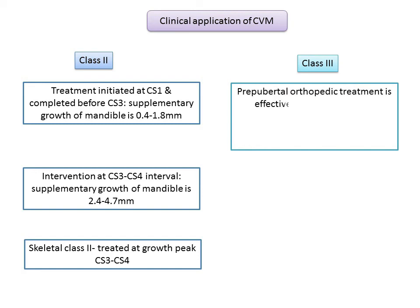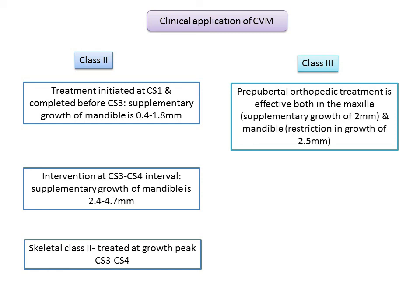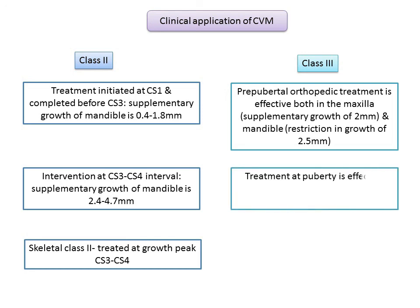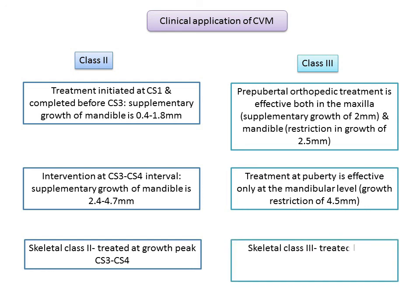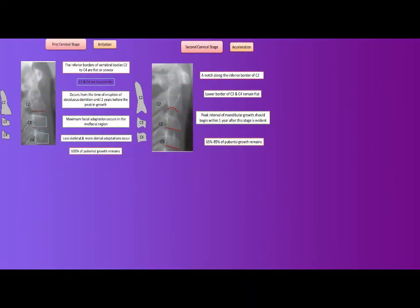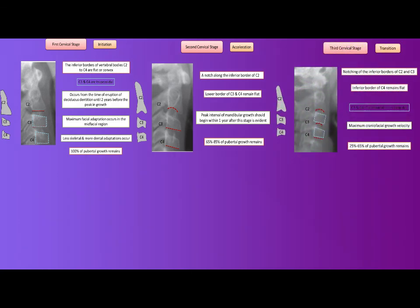For Class III molar occlusion, prepubertal orthopedic treatment is effective both in the maxilla — showing supplementary growth of about 2 millimeters — and in the mandible, showing a growth restriction of about 3.5 millimeters. Treatment of Class III at puberty is effective at the mandibular level only, resulting in a restriction of mandibular growth by about 4.5 millimeters. Hence, Class III should be treated before the growth peak, at CS1 or CS2.